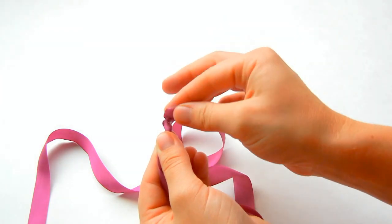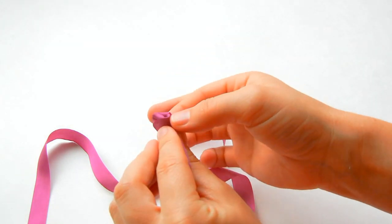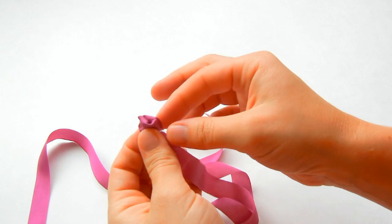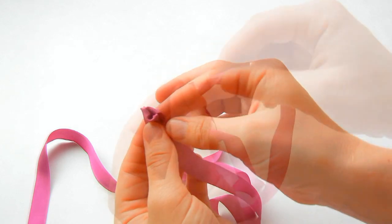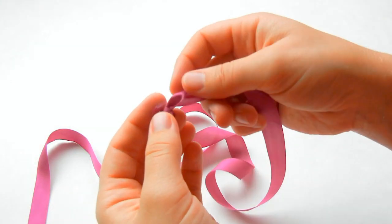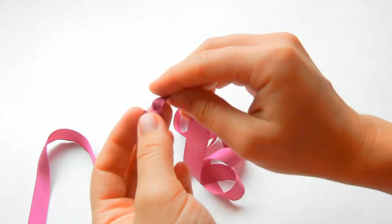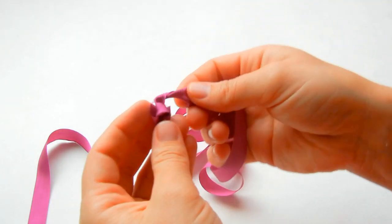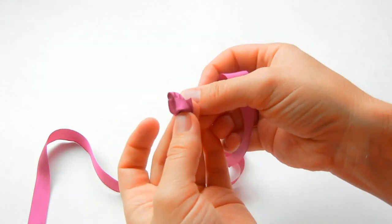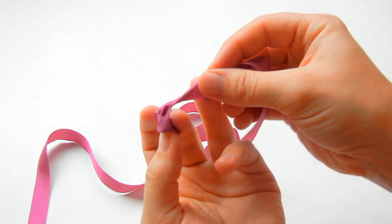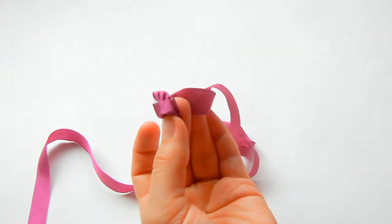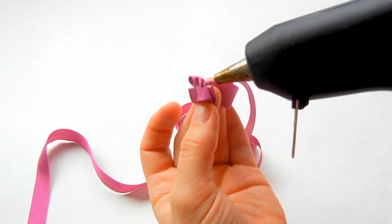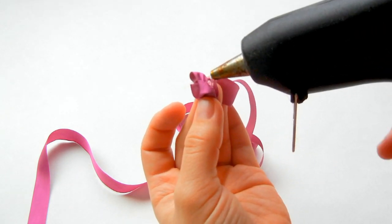Fold down the excess ribbon. Now what we're going to do is roll the ribbon a few times. Usually I hold it with these two fingers after I've rolled it. Take your hot glue and just place a dab right on the side of that knot.